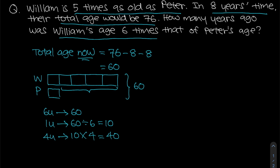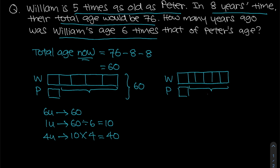The age difference is 40. Now we draw a second model to find their ages when William's age is six times that of Peter's age. For William, instead of five boxes, I draw six boxes — three on each side — and for Peter, one box. The age difference must still be 40.